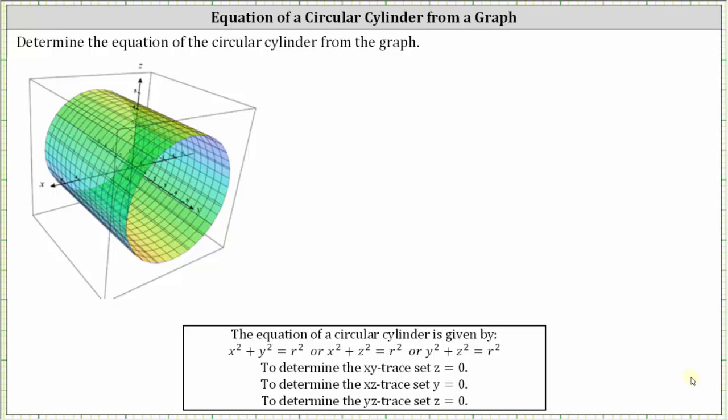We're asked to determine the equation of the circular cylinder from the graph. The equation of a circular cylinder is given by one of the three equations shown here where r is the radius of the circle.